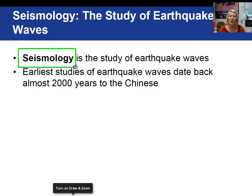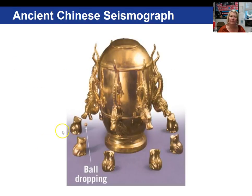Seismology is the branch of geology that studies earthquakes. The Chinese were studying earthquakes over 2,000 years ago. Looking at the ancient Chinese seismograph: when the ground began to shake, depending on what direction the shake was coming from, a ball would drop out of the dragon's mouth and into a waiting frog.